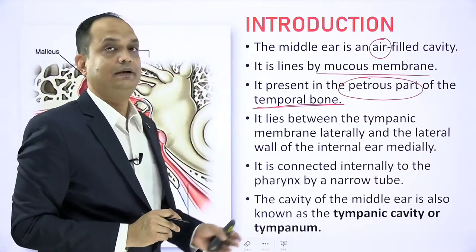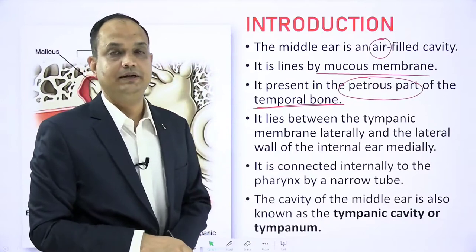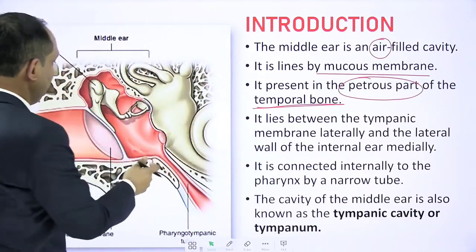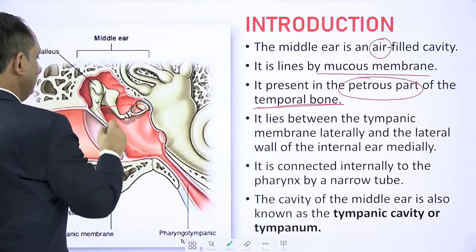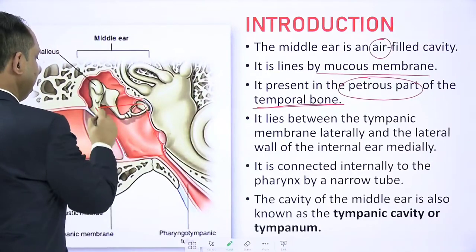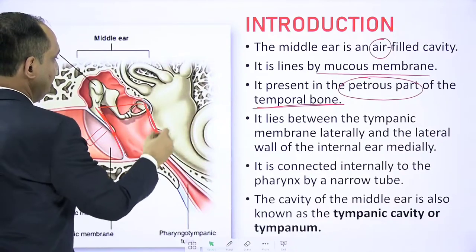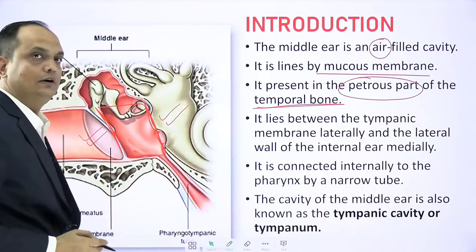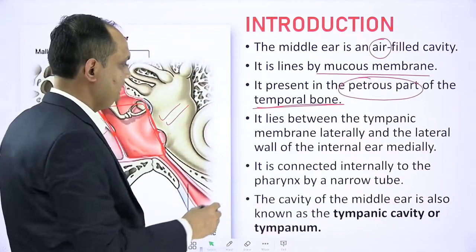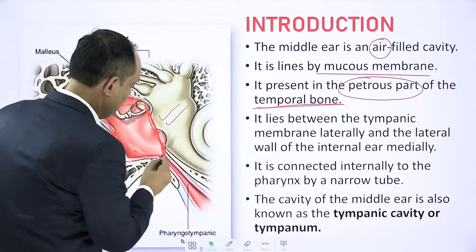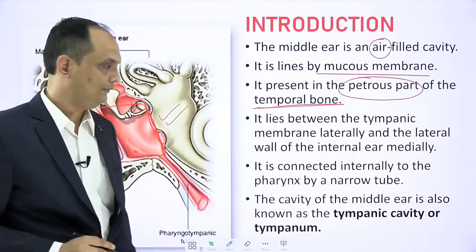The middle ear cavity is lined by mucous membrane and is present in the petrous part of the temporal bone — important for your exam. It lies between the tympanic membrane laterally and the lateral wall of the internal ear medially. In the diagram, the lateral wall is formed by the tympanic membrane, and the medial wall is formed by the wall of the inner ear. Internally it connects to the auditory tube which opens into the nasopharynx.